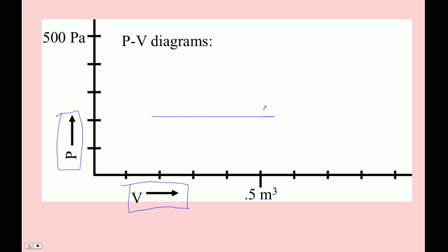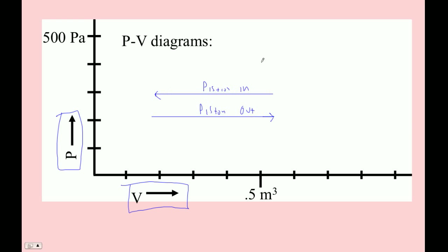So the piston moving out is like this, and the piston moving in is like this. This is piston moves out, and piston moves in. That's because the volume is increasing here, so the piston must move out, and here the volume is decreasing, so the piston is moving in.